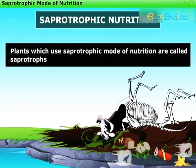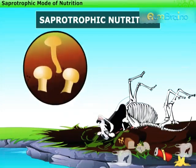Plants which use this mode of nutrition are called saprotrophs. For example, mushrooms.